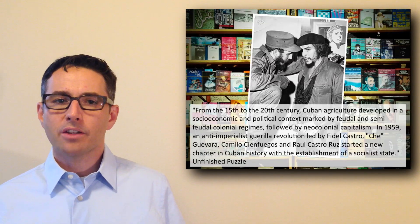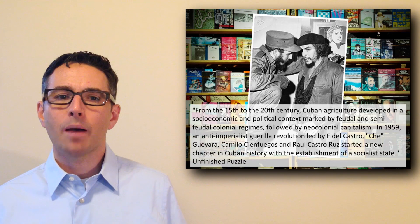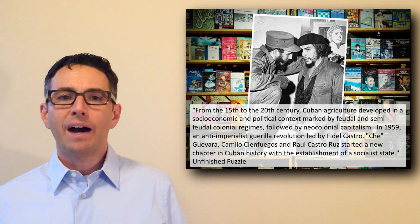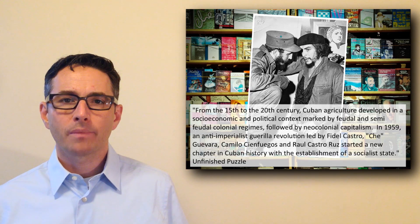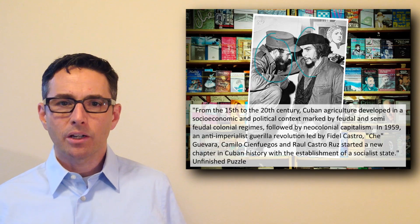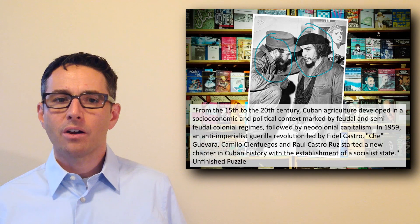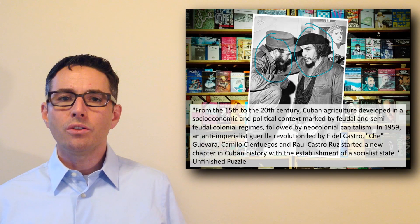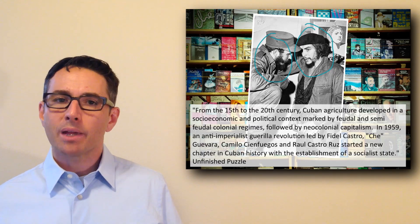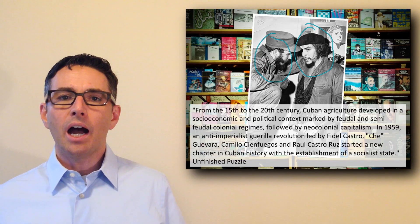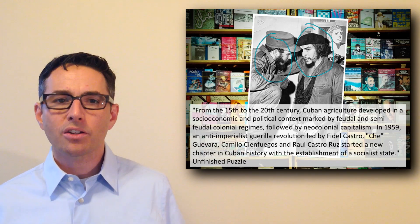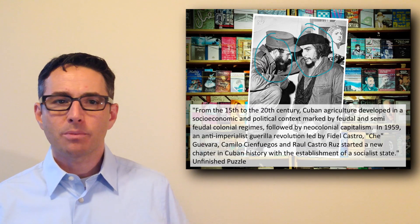This is a quote from one of our books: 'From the 15th to the 20th century, Cuban agriculture developed in a socioeconomic and political context that was marked by feudal and semi-feudal colonial regimes, followed by neocolonial capitalism.' In 1959, an anti-imperialist guerrilla revolution led by Fidel Castro, Che Guevara, Camilo Cienfuegos, and Raul Castro Ruiz started a new chapter in Cuban history with the establishment of a socialist state. In contrast to capitalism, a socialist state is marked by a commitment to government ownership of most of the means of production and cooperative management of the economy.